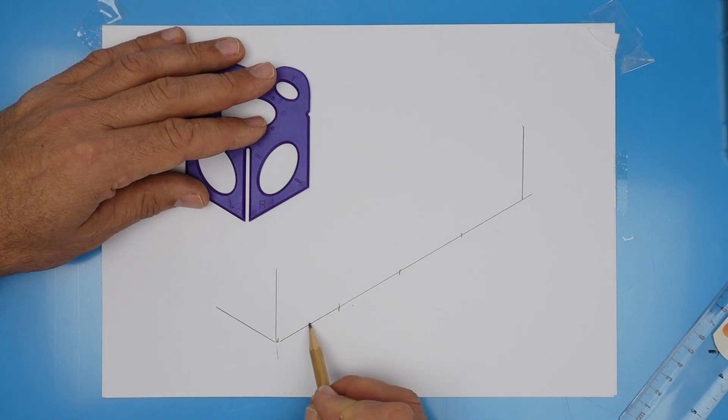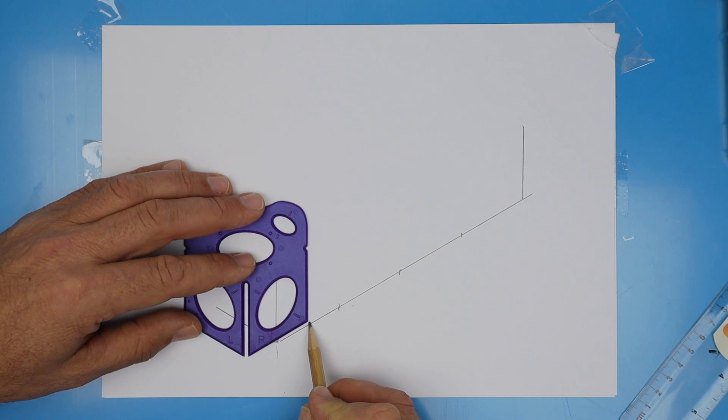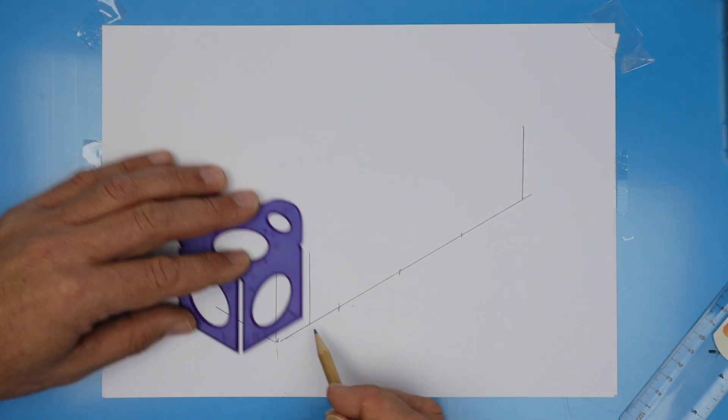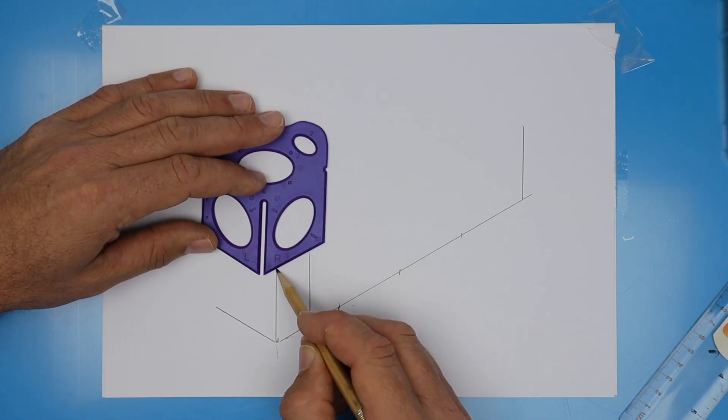In between those first two marks, I'm dividing it in half. And then I'm going to come straight up one splat length. Join those two at the top using your splat or isometric angle.